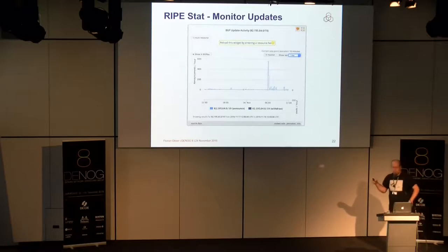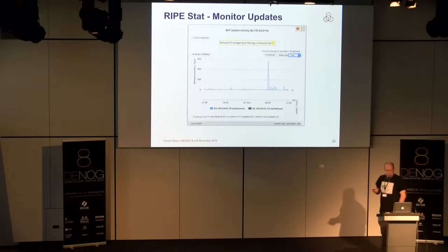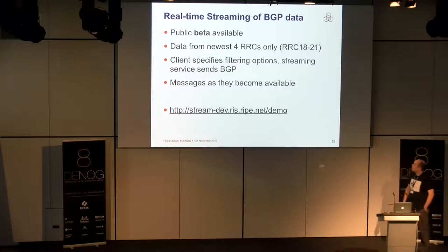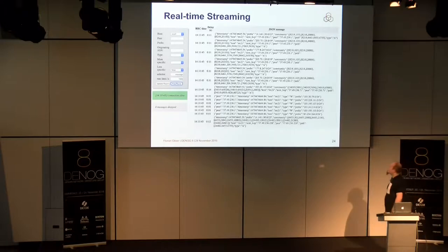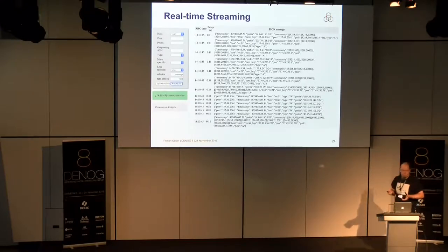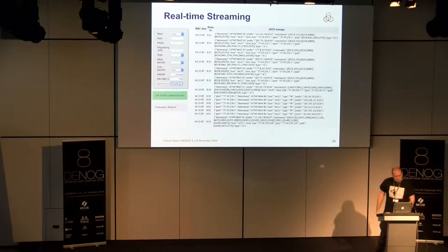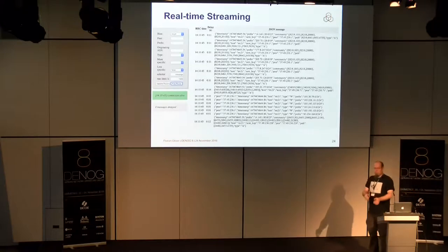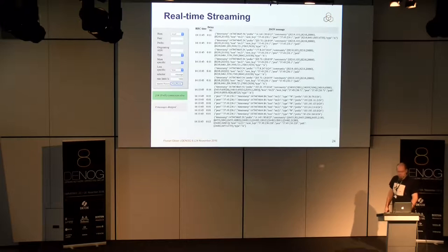The trouble is that this is old-style data, so we have a delay on the order of hours. With the new style RRCs, we can do something nicer — we can stream data to you. We have a demo for that using WebSockets to stream JSON data. In the first column, the RC time, that's when the data was collected, and the delay is calculated in the web browser. We have a delay of 0.1 seconds for the first message, which came from RC21 in Zurich. So it took 0.1 seconds to get data from Zurich to Amsterdam through the whole processing pipeline and to the browser — quite fast, at least faster than on the order of hours.